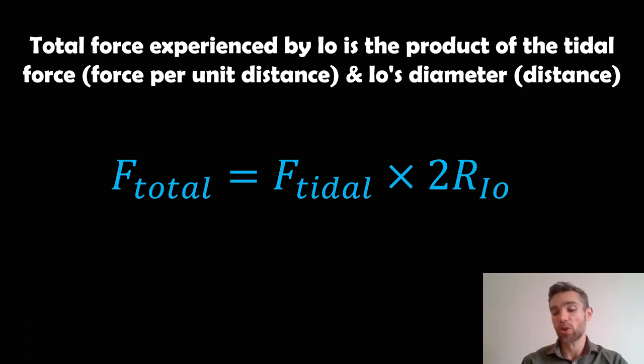Again, that's the distance across the actual body itself, because actually the tidal or the force on the opposite side of Io from Jupiter is not going to be exactly the same as the one directly close to Jupiter. There's going to be a difference, a gradient of that force across the actual diameter of Io.